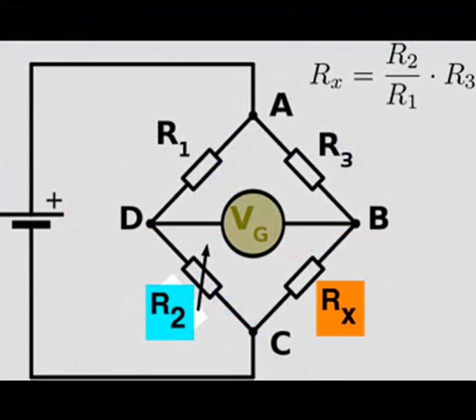Once the bridge is balanced, the value of the unknown resistor can be calculated using the known resistor values and the position of the rheostat. This calculation is based on the principle of proportionality between the resistances in the bridge.